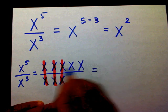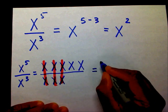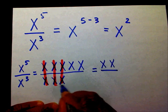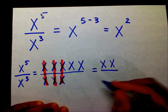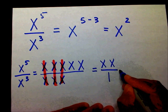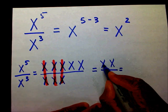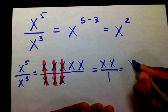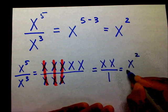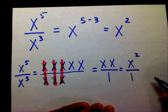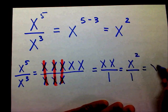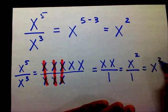What does that leave me with? In the top I have x and x, and in the bottom I have nothing, so I put a 1. Instead of writing x times x, I can write x squared over 1. And anything over 1 equals that numerator, so the answer is x squared.